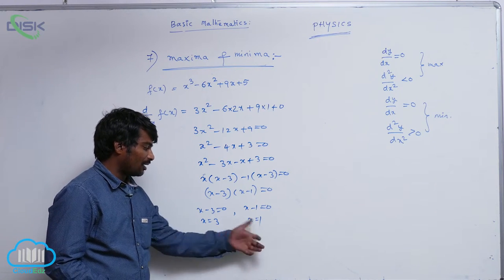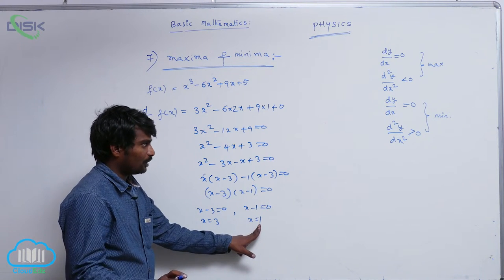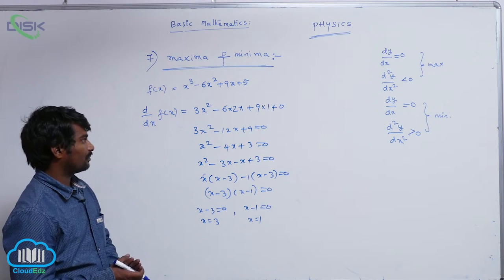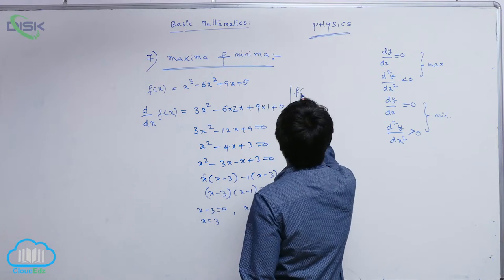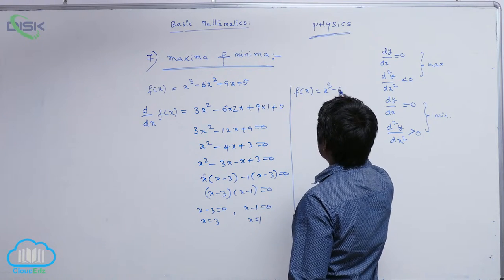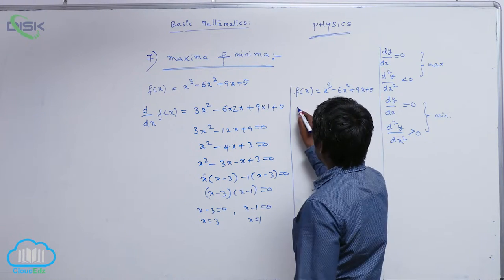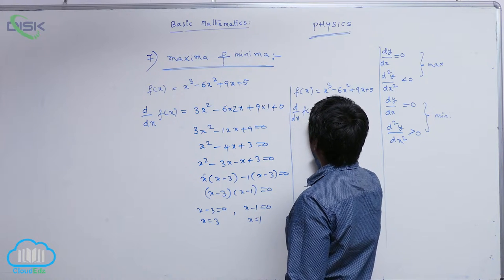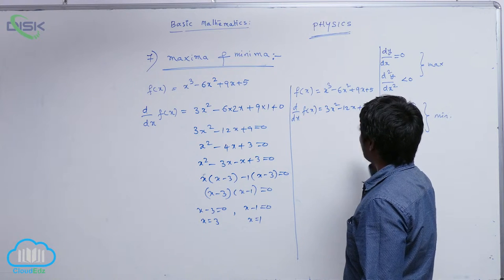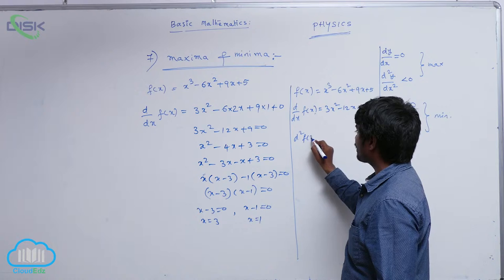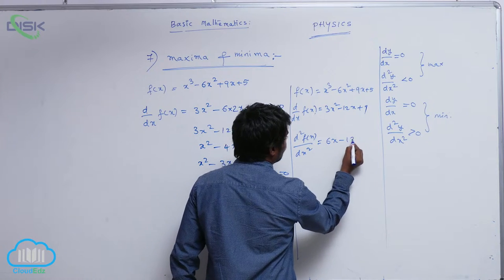At x equal to 3 and x equal to 1, the function may attain maximum or minimum value. To test whether at x equal to 1 it attains maxima or minima, we go for double differentiation. We know f of x is equal to x cube minus 6x square plus 9x plus 5, and d by dx of f of x is equal to 3x square minus 12x plus 9. Differentiating again, d square f of x by dx square is equal to 6x minus 12.